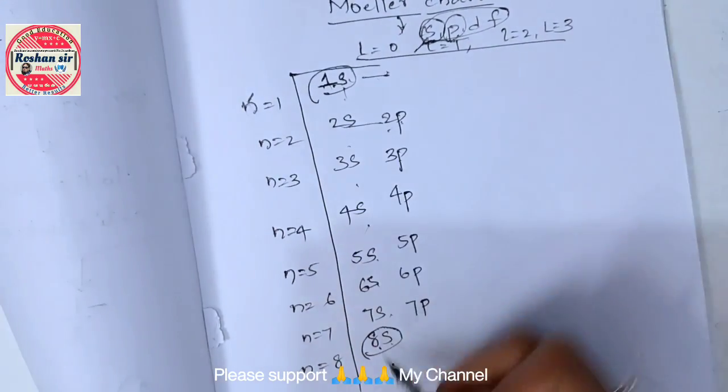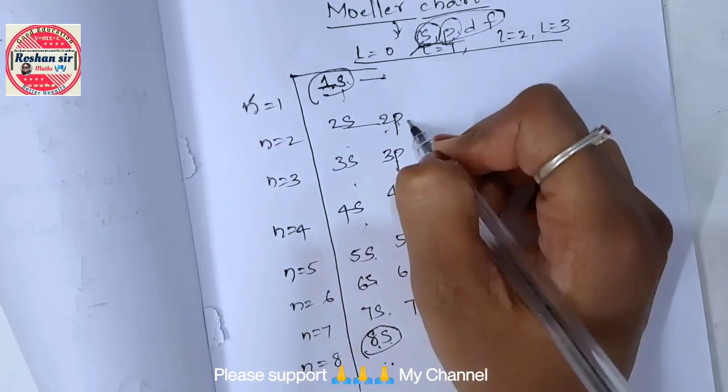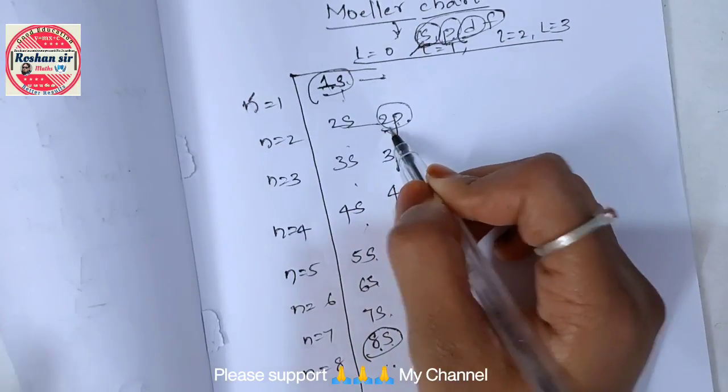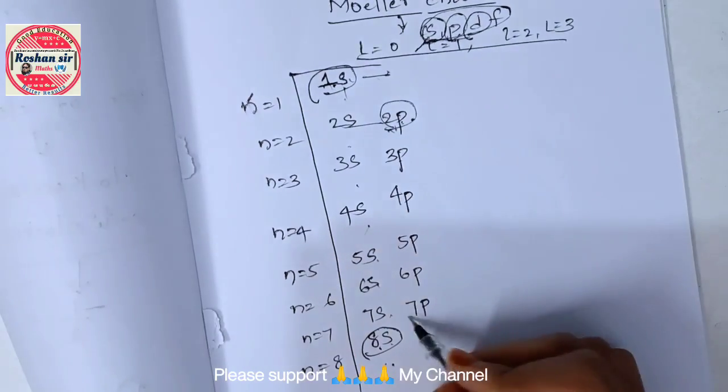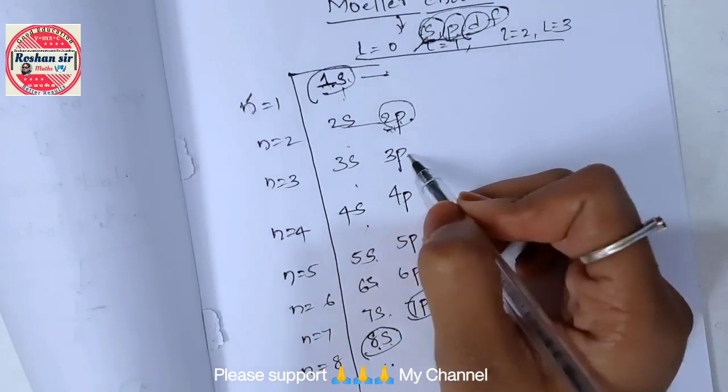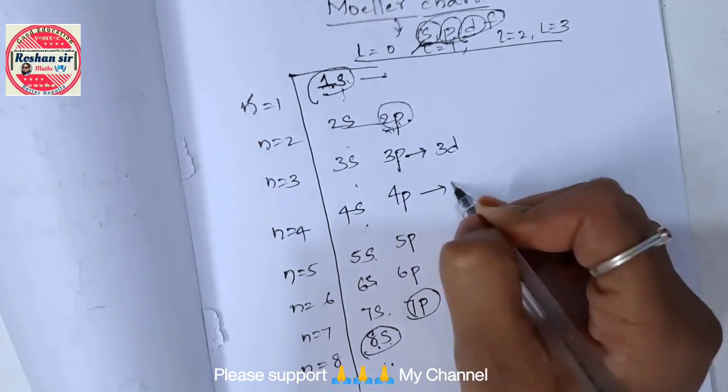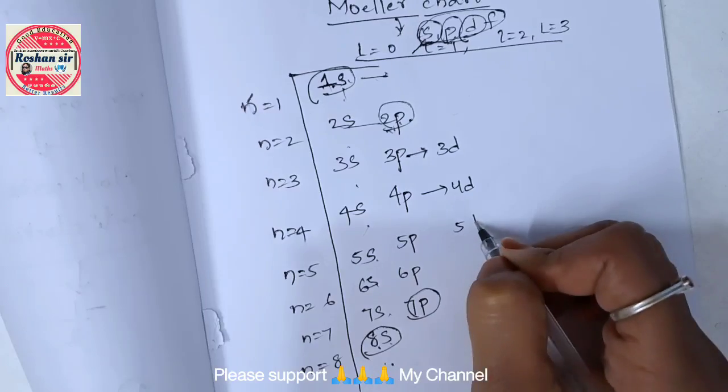Now this third one is D orbit. Here also leave this second, I mean this 2p as well as 7p. Now write from 3p, so 3d, 4d, 5d, 6d.